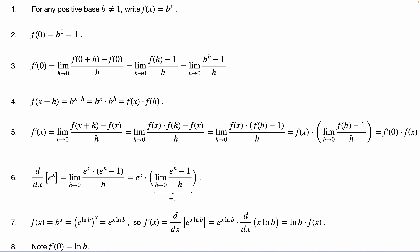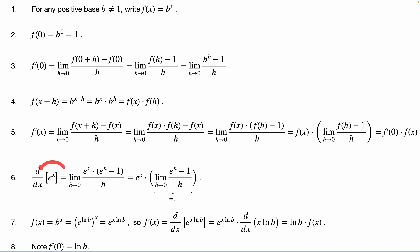First is in step three, we focus on a specific instantaneous rate of change at zero and are able to say something about the general rate of change. Second, we are able in step six to specify a particular base B and use that to gain knowledge about the general base B.